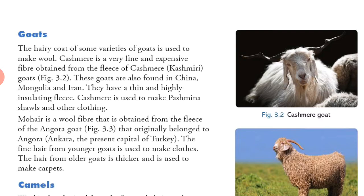Mohair is a wool fiber obtained from the fleece of the Angora goat, which originally belonged to Angora — Ankara — the present capital of Turkey. The fine hair from the younger goats is used to make clothes, while the hair from the older goats is thicker and is used to make carpets.